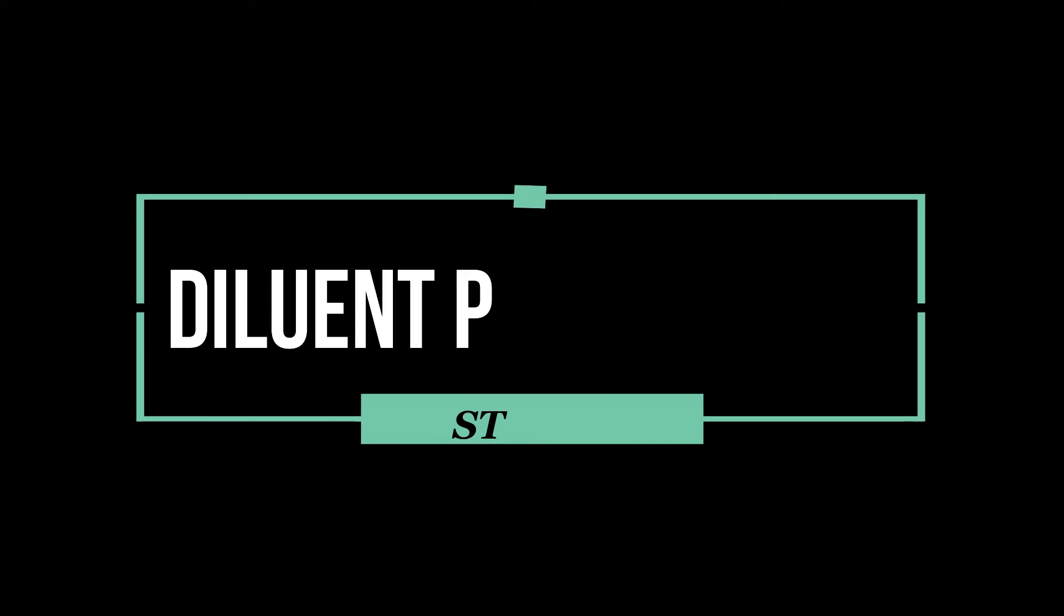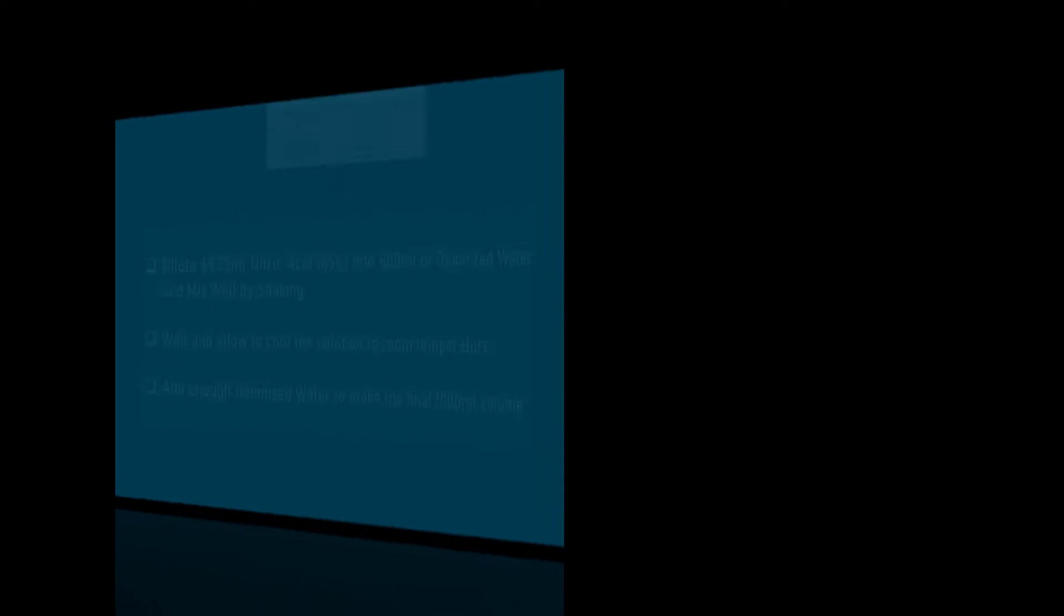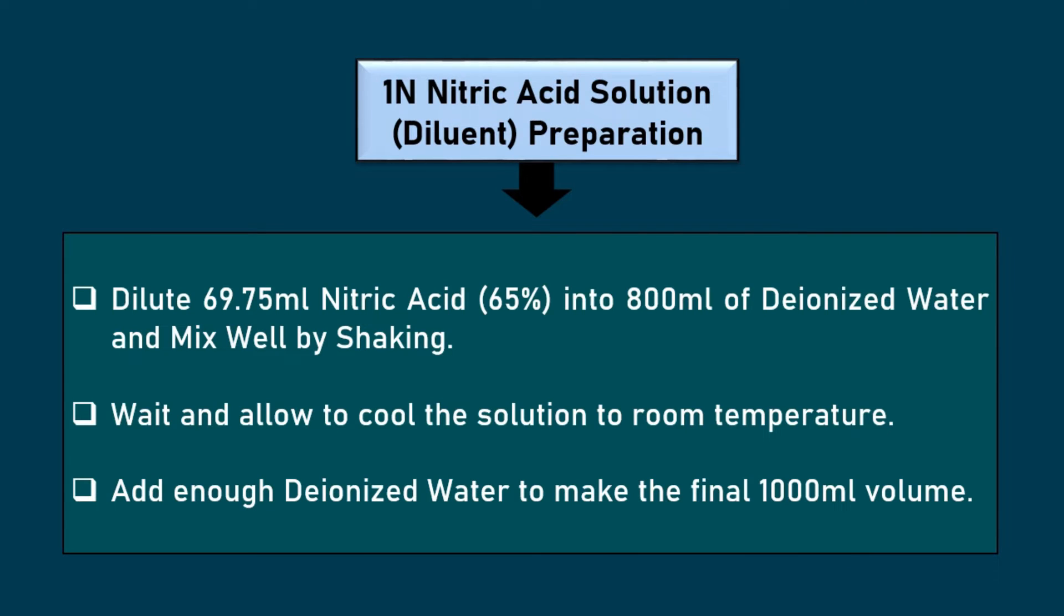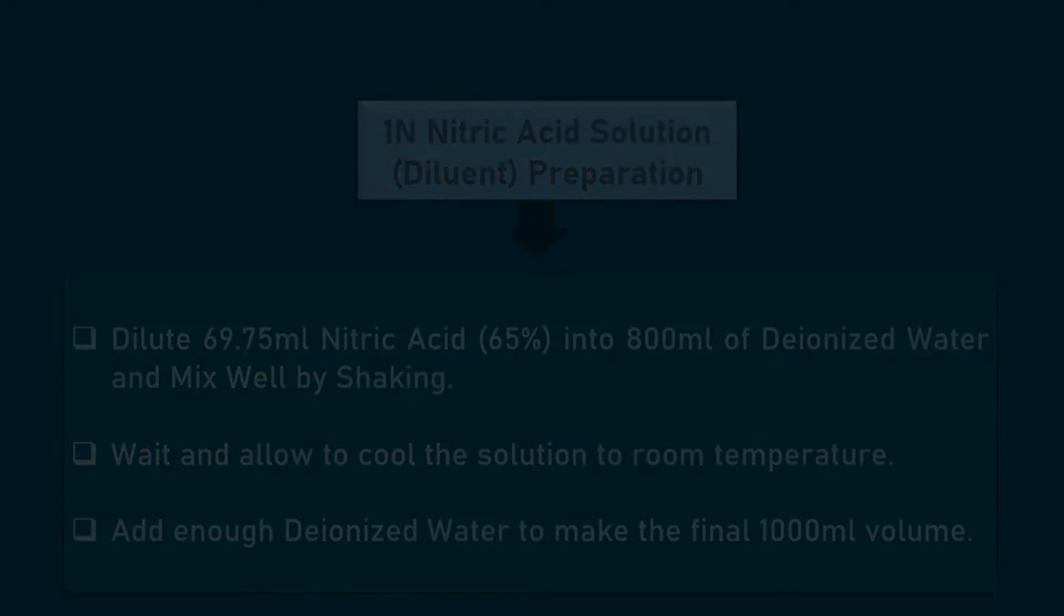We will use one normal nitric acid as diluent to prepare our sample. Dilute 69.75 ml of 65% nitric acid in about 800 ml deionized water. Mix the solution by shaking. Now, add deionized water to make the final volume of 1000 ml.